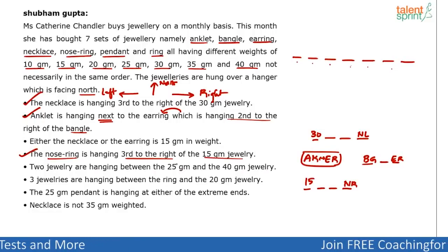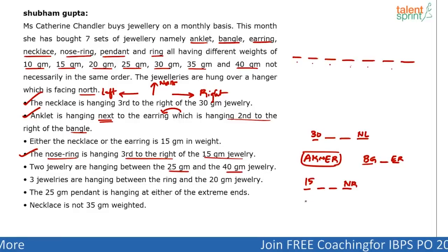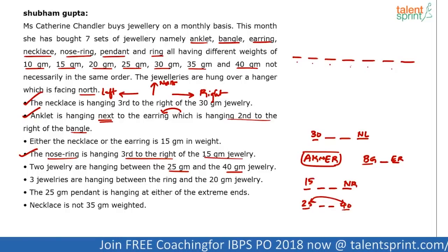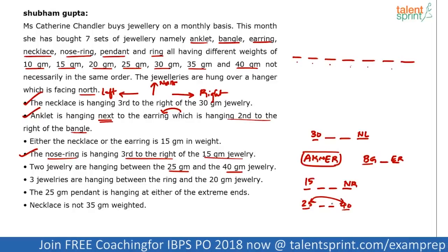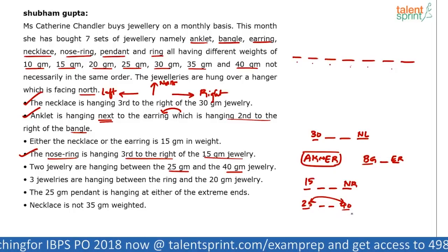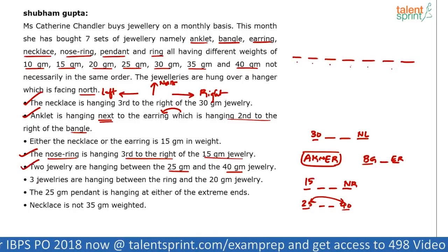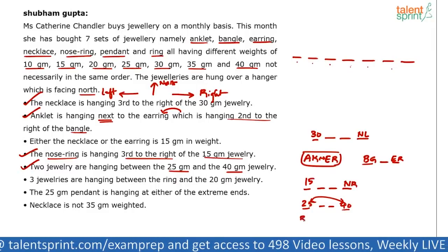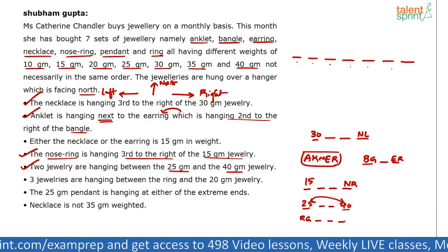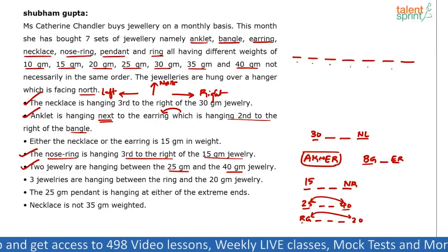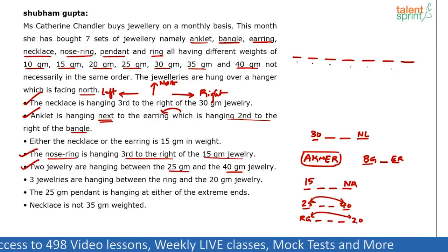Next: two jewellery are hanging between 25 gram and 40 gram jewellery. There are two pieces between 25g and 40g — so if this is 25, there will be two pieces between 25g and 40g. Remember these two can be swapped because we don't know which is on the right or left side. Next: three are between ring and 20 gram — ring (Rg), dash, dash, dash, 20. These two can also be swapped: 20 dash dash dash Rg, or Rg dash dash dash 20.